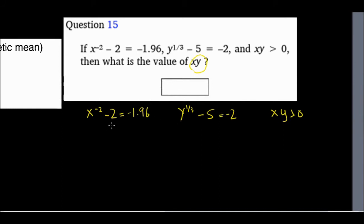Let's see what I can do with the first equation. How about I take this negative 2 to the other side. Now it's negative here on the left side. So when I take it to the other side, it will become a positive 2. So I'll have negative 1.96 plus 2. And this sum is 0.04.